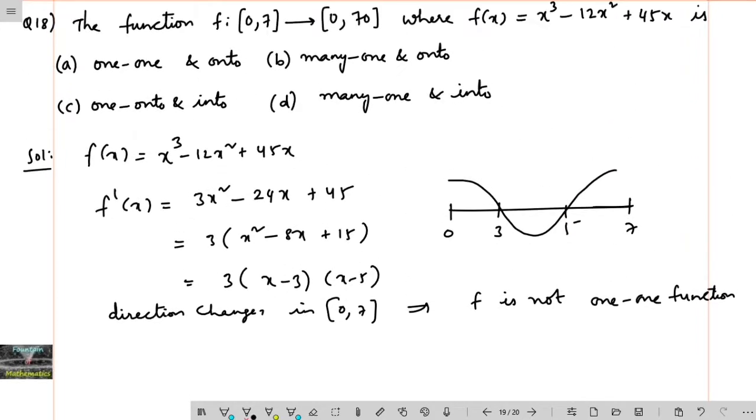If this function is not one-to-one, let us check whether it is onto or not. Your codomain is given [0,70], so your codomain must equal the range. We observe there are critical points like 0, 3, 5, and 7. If we check the critical points including boundary points and if every value lies in [0,70], then we can see it is an onto function.